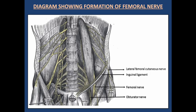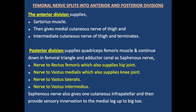This diagram shows the formation of the femoral nerve, with the psoas muscle removed to understand the divisions. The femoral nerve is formed from L2, L3, and L4. It splits into anterior and posterior divisions. The anterior division supplies the sartorius muscle and gives two cutaneous branches: the medial cutaneous nerve of thigh and the intermediate cutaneous nerve of thigh. The lateral cutaneous nerve of thigh comes as a separate nerve. The posterior division supplies the quadriceps muscle and continues down in the femoral triangle and adductor canal as the saphenous nerve.